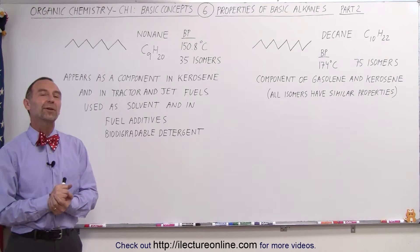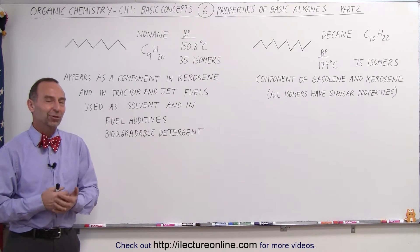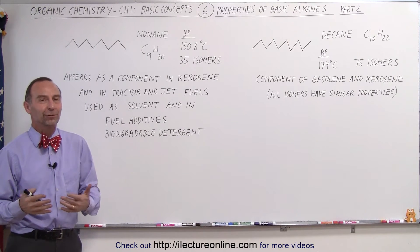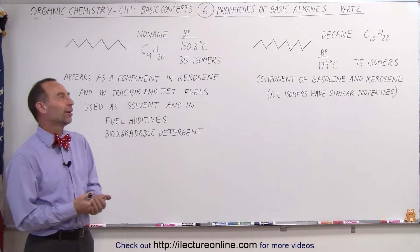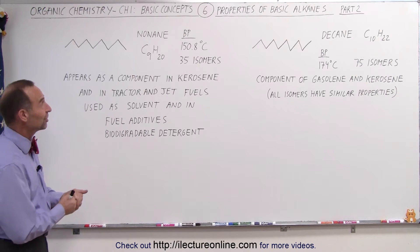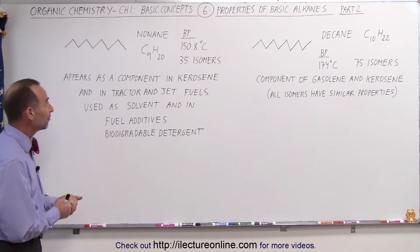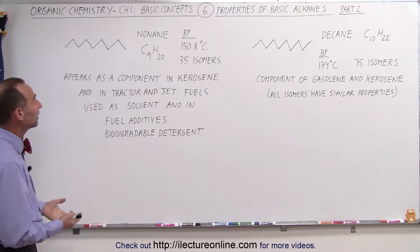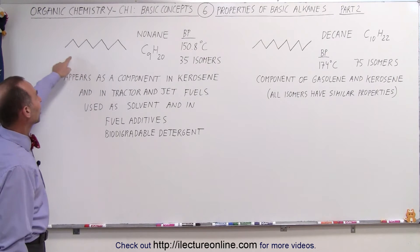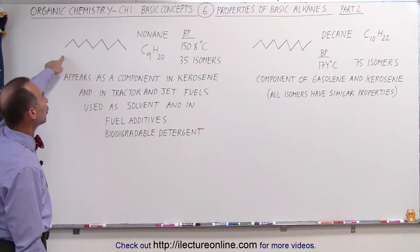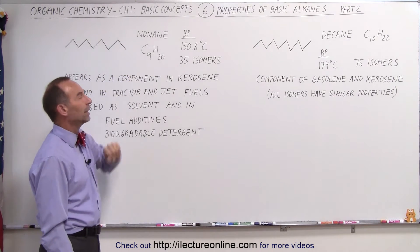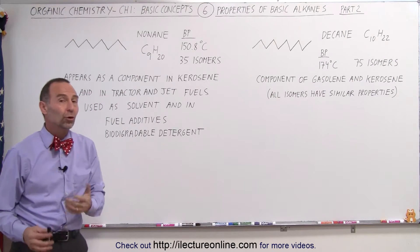Welcome to Electron Line. Let's finish off the set and call the first 10 of the alkanes important enough to mention here. We have number 9 and number 10. The one with 9 carbons is called nonane, and it has 9 carbons and 20 hydrogens.